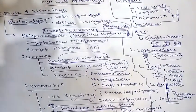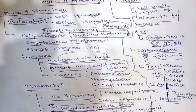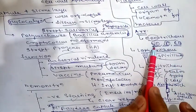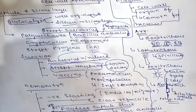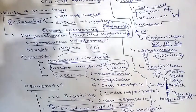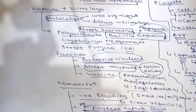To revise the flagellar arrangements: monotrichous in Pseudomonas and Campylobacter, lophotrichous in Spirillum, peritrichous very importantly in Salmonella typhi and E. coli, and amphitrichous in Alcaligenes faecalis.